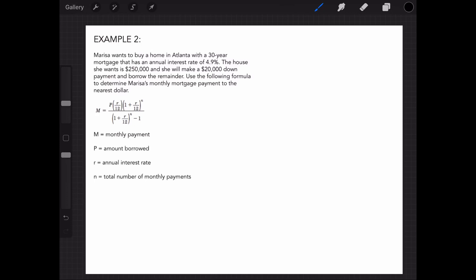Let's first make any connections of important values needed for the formula, being careful to not mix up any values. I see that the first variable M is monthly payment, which is what I'm being asked to find.